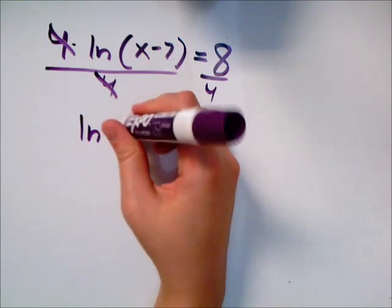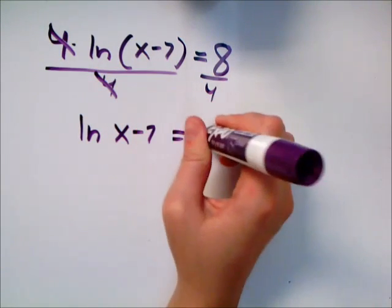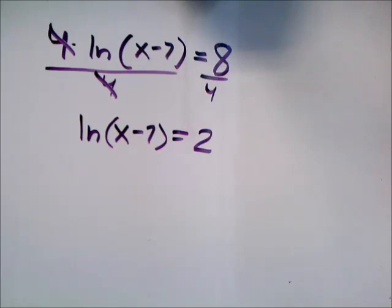So now we have natural log of x minus 7 equals 2. If anything's trapped in the log, I can rewrite it as an exponential function.